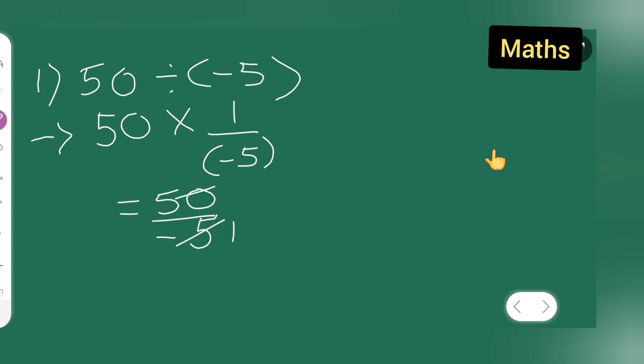5 ones are 5, 5 tens are 50. So what it means is now what I am going to get is...